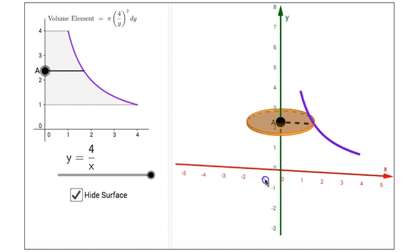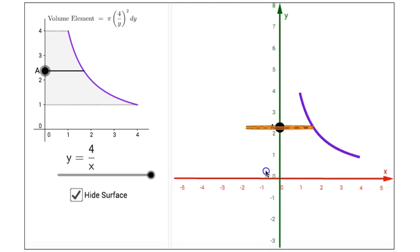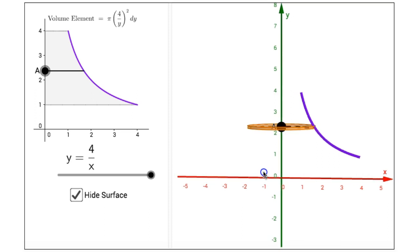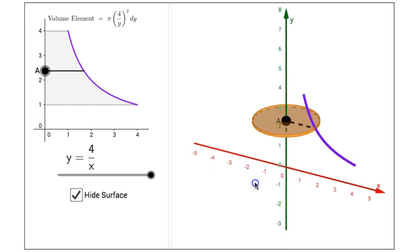And again this volume element is nothing more than a very small thin cylinder whose height is dy and whose radius is 4 divided by y. So the volume of this little cylinder would be pi times the quantity 4 divided by y squared times dy.